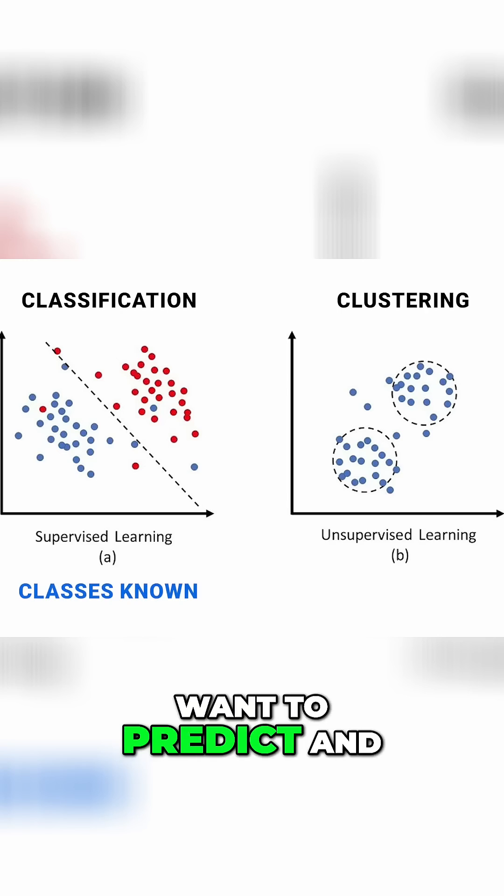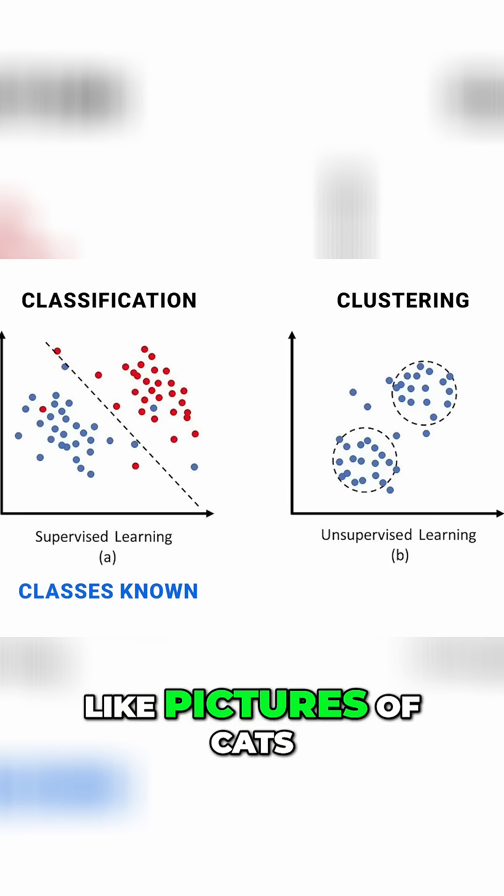Classification is when we know the classes we want to predict and have training data with true labels available, shown as colors here, like pictures of cats and dogs.